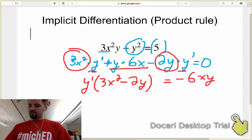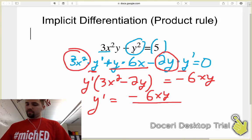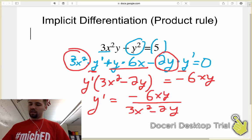The next thing that we're going to do is solve this for y', so we're going to divide both sides by 3x² - 2y. So we end up with y' = -6xy/(3x² - 2y), the entire quantity. And so that's our final answer.